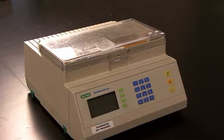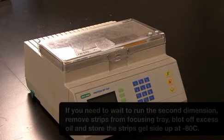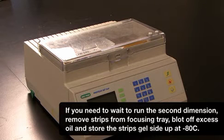At the completion of focusing, if you do not have time to run the second dimension gel, first remove the strips from the focusing tray, blot off the excess mineral oil, and place the strips into a rehydration tray at minus 80 degrees C.